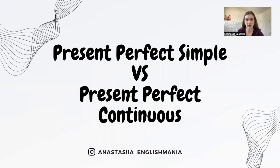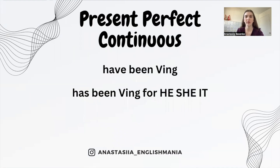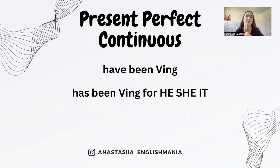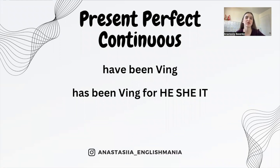Now let's talk about present perfect continuous. The formula is: have been plus the main verb with an -ing ending. Remember that with he, she, it, we use has — so has been plus the verb with -ing. To make a negative sentence, we put 'not' after have or has, and to make questions, we put have or has at the beginning.